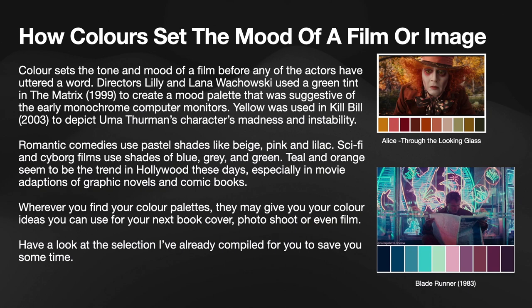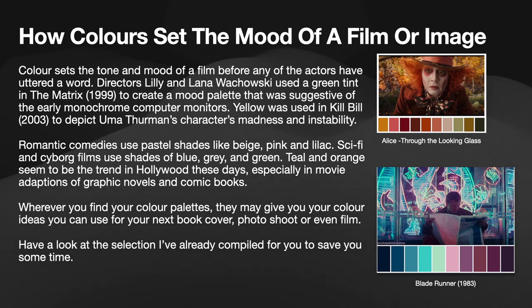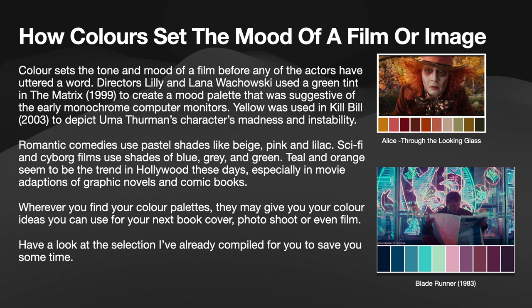How colours set the mood of a film or image is probably something you may not have noticed too much. Colour sets the tone and mood of a film before any of the actors have uttered a word. Directors Lily and Lana Wachowski used a green tint in The Matrix, 1999, to create a mood palette suggestive of early monochrome computer monitors. Yellow was used in Kill Bill, 2003, to depict Uma Thurman's character's madness and instability.